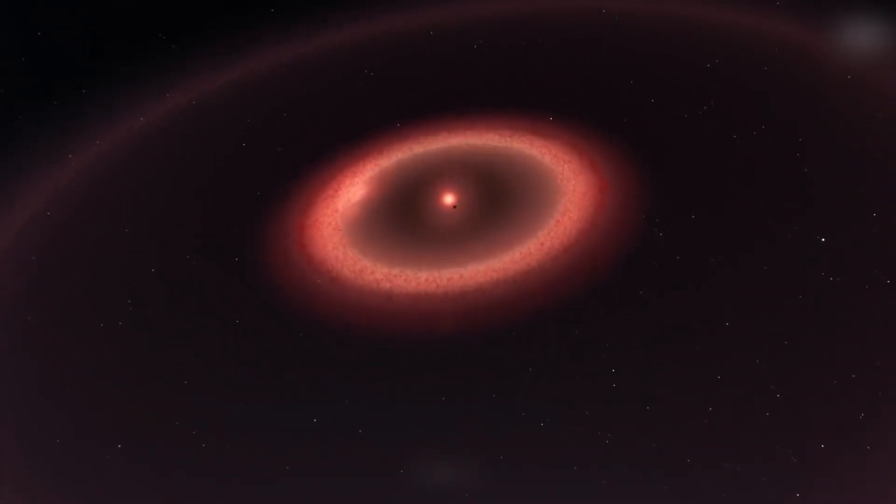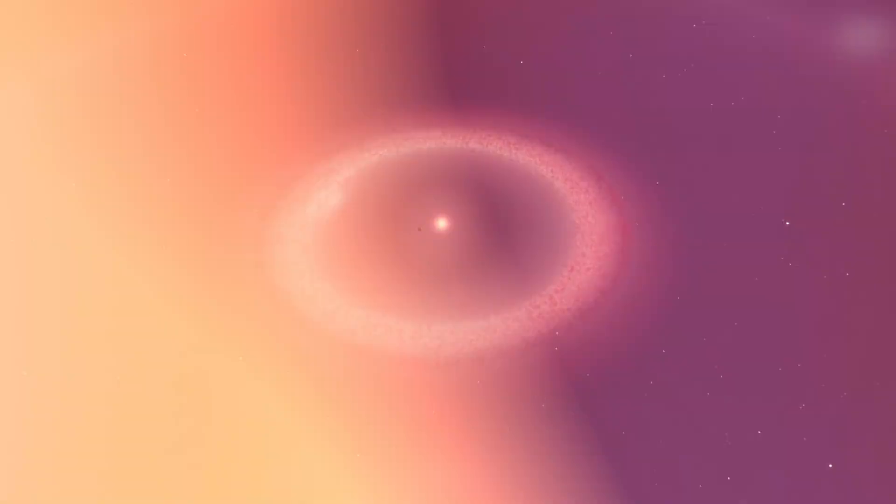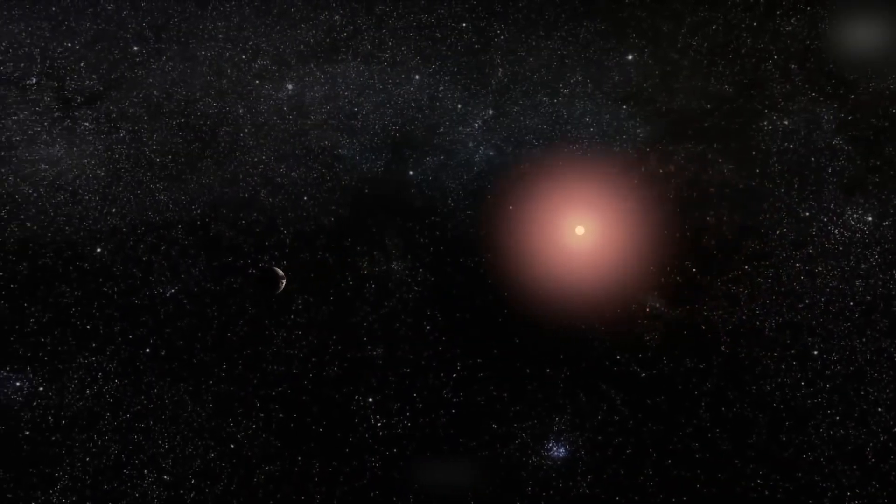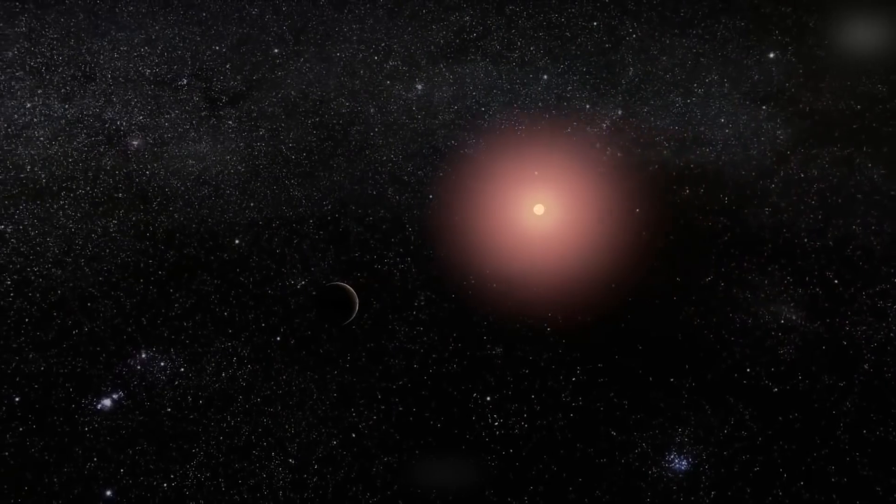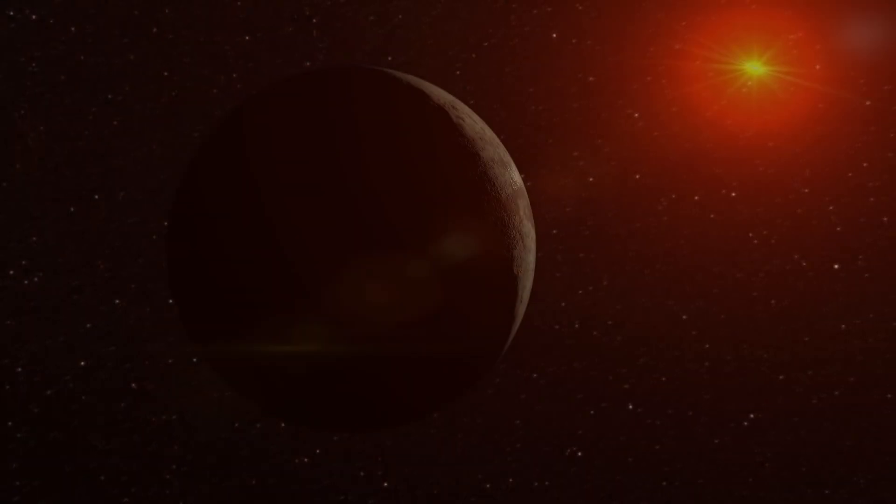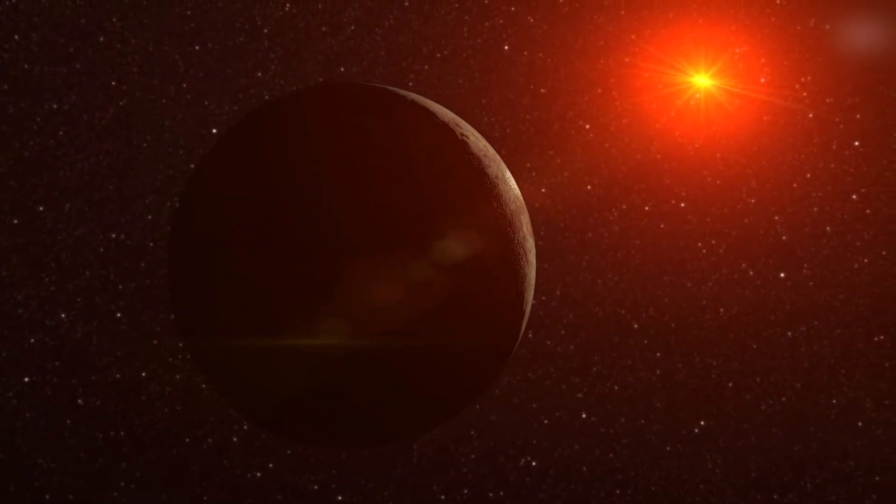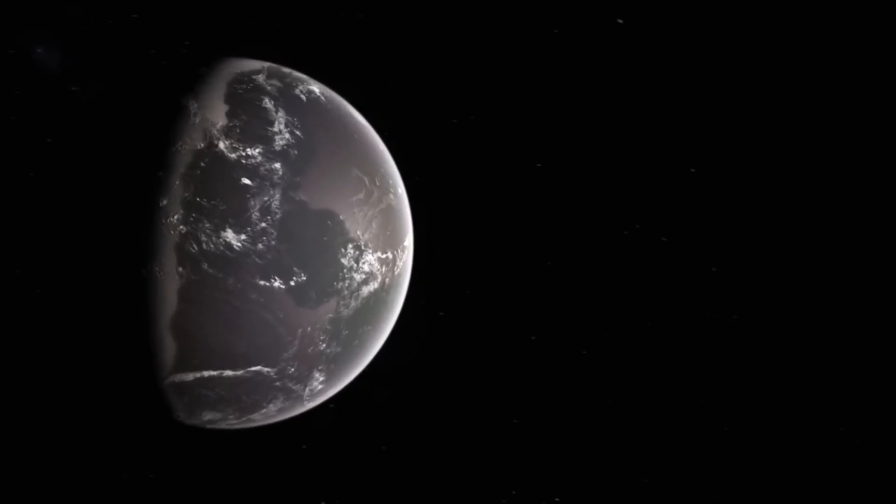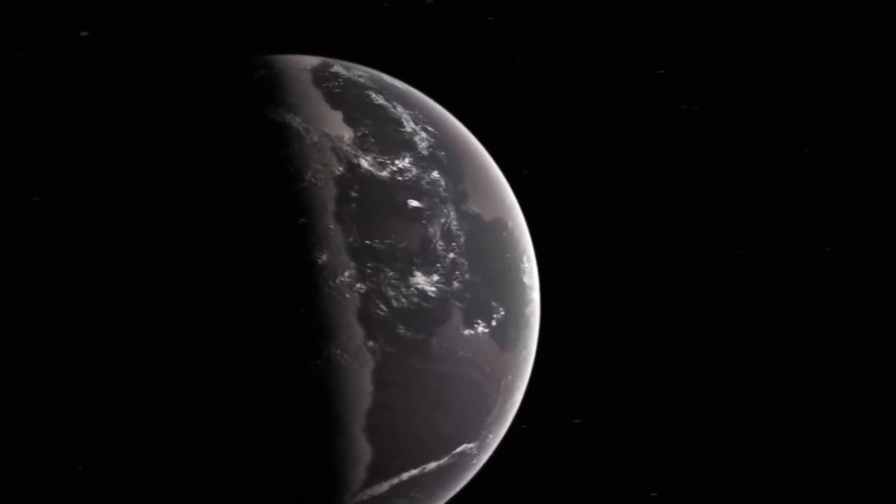Since Proxima b orbits so near to its host star, it is possible that the planet is tidally locked, with one side of the planet always facing the star and the other side eternally in eternal light. This would make one side of Earth permanently illuminated while the other remained in darkness.